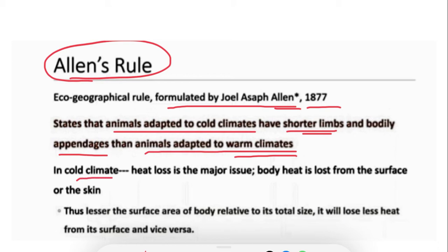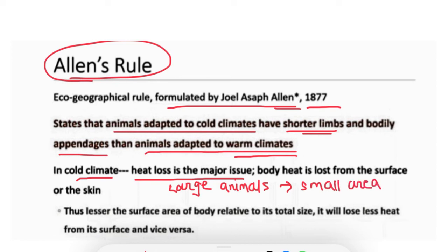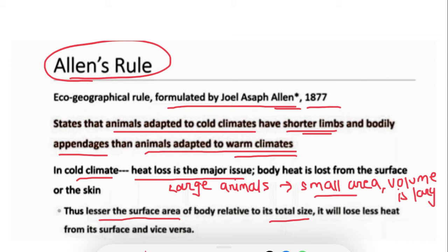Why do animals in cold climates have shorter limbs? Because in cold climates, heat loss is the major issue. We know that in cold climates, large animals have a smaller surface area relative to their volume. Their volume is large but their surface area is smaller, which means they lose less heat from their body surface, helping them conserve more heat.